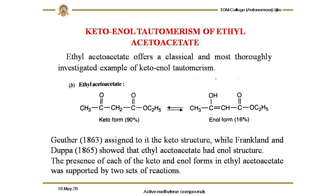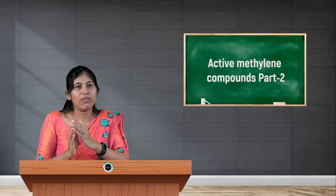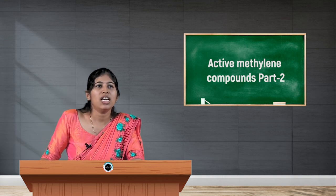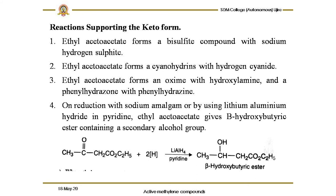Ethyl acetoacetate offers the classical and most thoroughly investigated example of keto-enol tautomerism. Geuther in 1863 assigned it a keto structure, while Frankland and Duppa in 1865 showed it had an enol structure. The presence of both the keto and enol forms in ethyl acetoacetate was confirmed by two sets of reactions — one set showing a carbonyl group and another showing an alcoholic OH group.